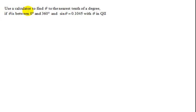In this problem, I need to use a calculator to find my angle theta to the nearest tenth of a degree. If I know that theta lies somewhere between 0 and 360 degrees, that means I'm in degrees, and the sine of theta is 0.1045, but theta is in quadrant 2.